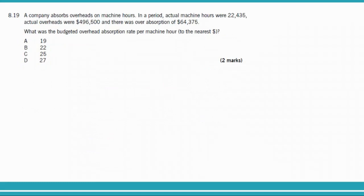Question 8.19: a company absorbs overheads on machine hours. Actual machine hours were 22,435, actual overheads were $496,500, and there was over absorption of $64,375. What was the budgeted overhead absorption rate per machine hour? Key point: because there is over absorption, absorbed overheads are more than actual overheads — so absorbed overheads equal $496,500 plus $64,375.